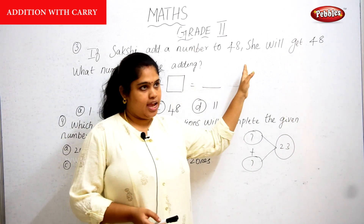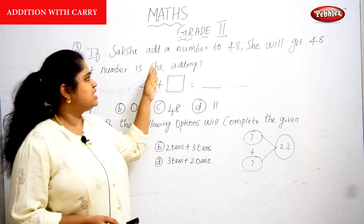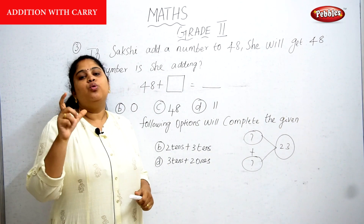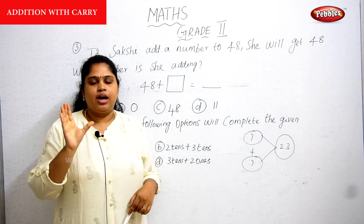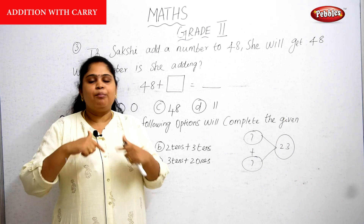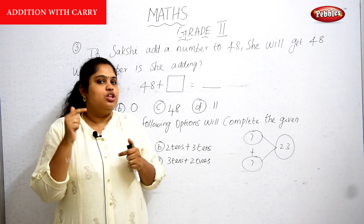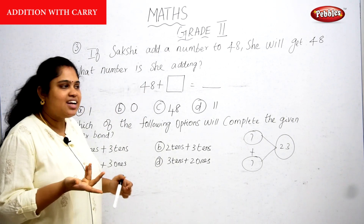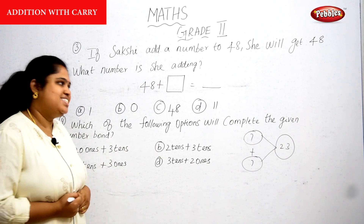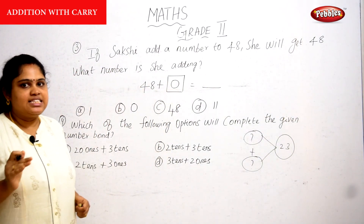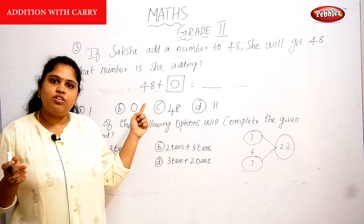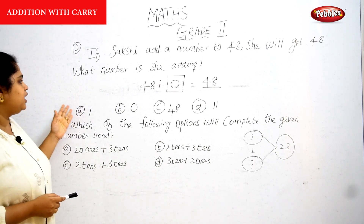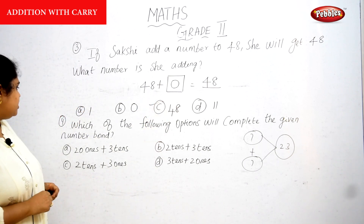Third question: if Shakshi adds a number to 48 and still gets 48, what number is she adding? If any number is added with 0, the answer will be the same number. So the answer is 0, and option C is the correct answer.